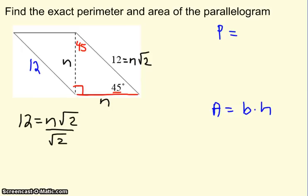I'm going to start by getting that n alone. So I divide both sides by root 2. The root 2s cancel. I'm left with 12 over the square root of 2.